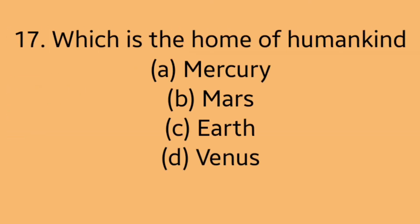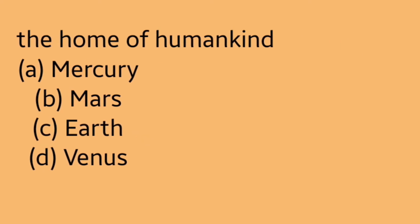Question 17: Which is the home of humankind? Option A: Mercury. Option B: Mars. Option C: Earth. Option D: Venus. Answer is Option C, Earth.